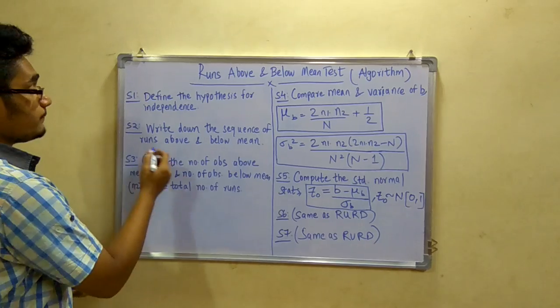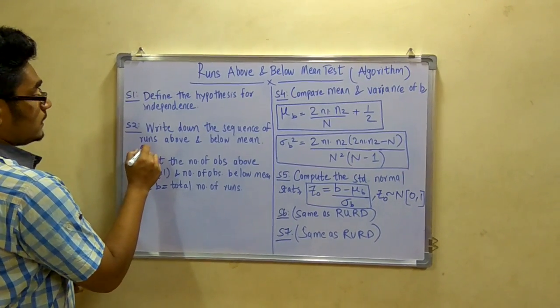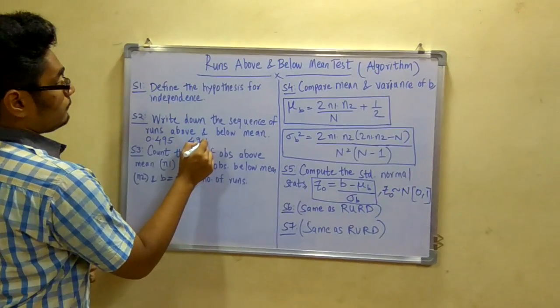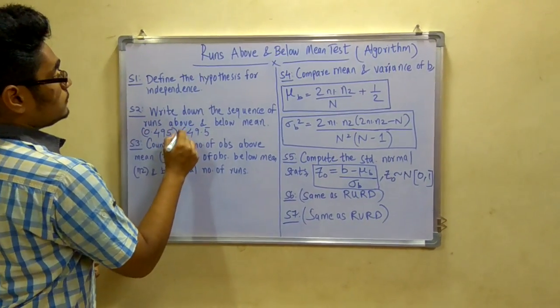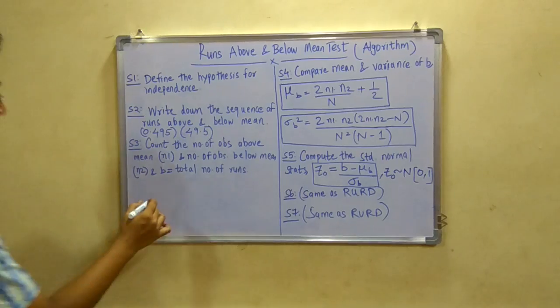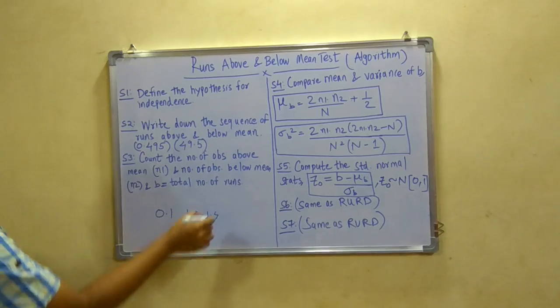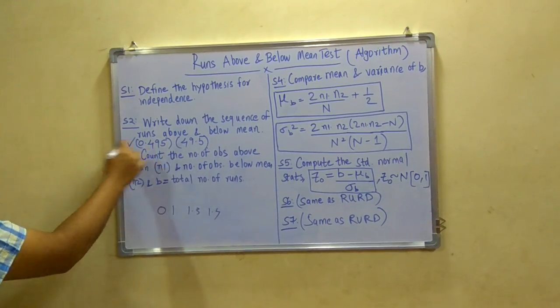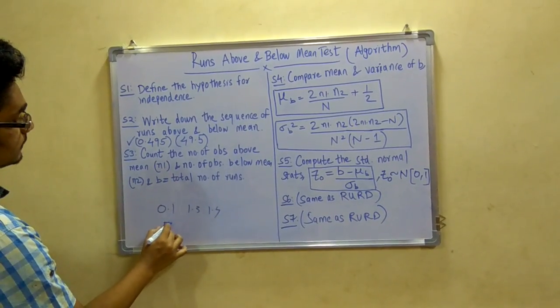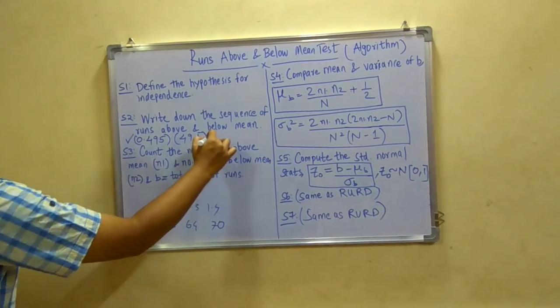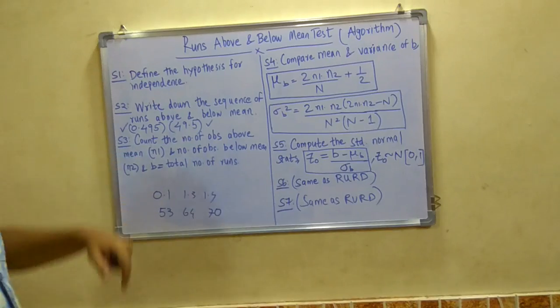But for runs above and below mean, you have the sequence of like 0.495 or 49.5. Now when to use these two values? If your given set of numbers are in decimals like 0.1 or 1.3 or 1.4 then you will use 0.495. Or if your numbers are a whole integer like 53, 64, 70 then you will write 49.5.